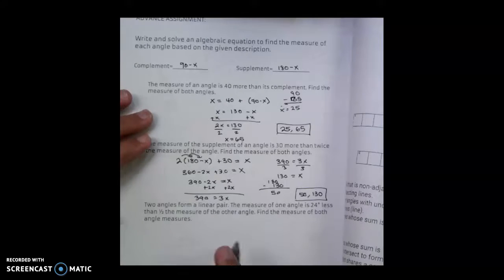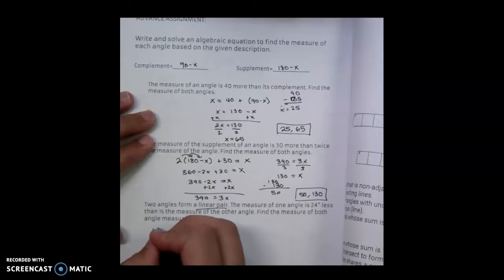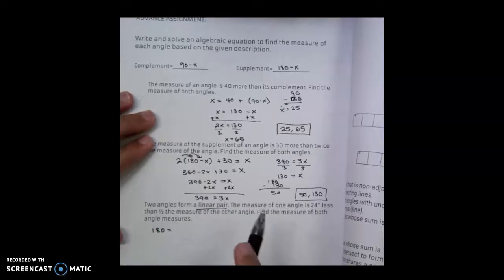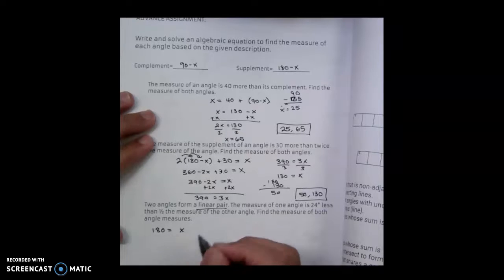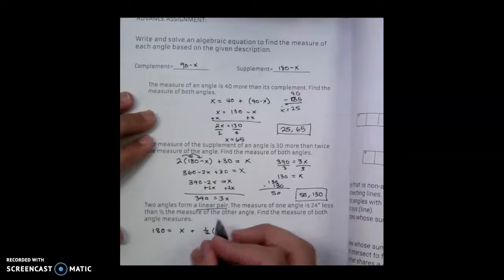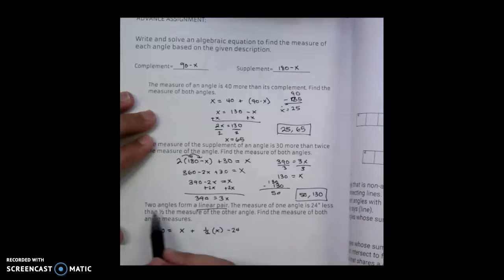The last problem says two angles form a linear pair. If we remember, that means that they are going to equal 180. Okay, the measure of one angle is 24 less than half the measure of the other angles. So I'm going to end up with one angle being x plus half of that x minus 24, since it says less than 24 of half the measure.